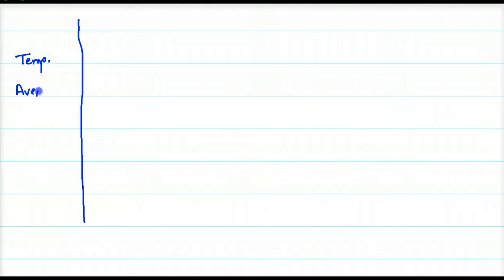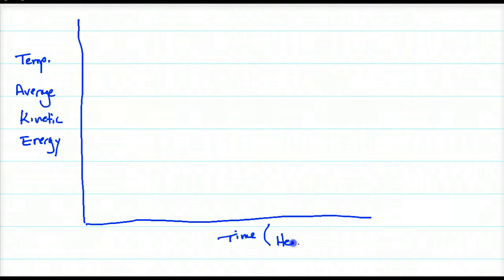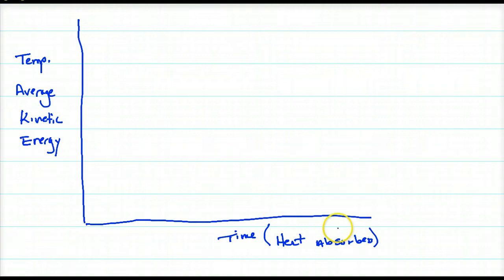On the y-axis we have temperature, which we know is the average kinetic or motion energy. On the x-axis we have a time coordinate. Along this time axis, heat is being absorbed — or consumed — by the compound. I like the word 'consumed' because 'absorbed' makes you think the object will just get warmer. But when ice absorbs heat, it isn't necessarily just getting warmer; it's using that energy to do something — in this case, become a liquid.